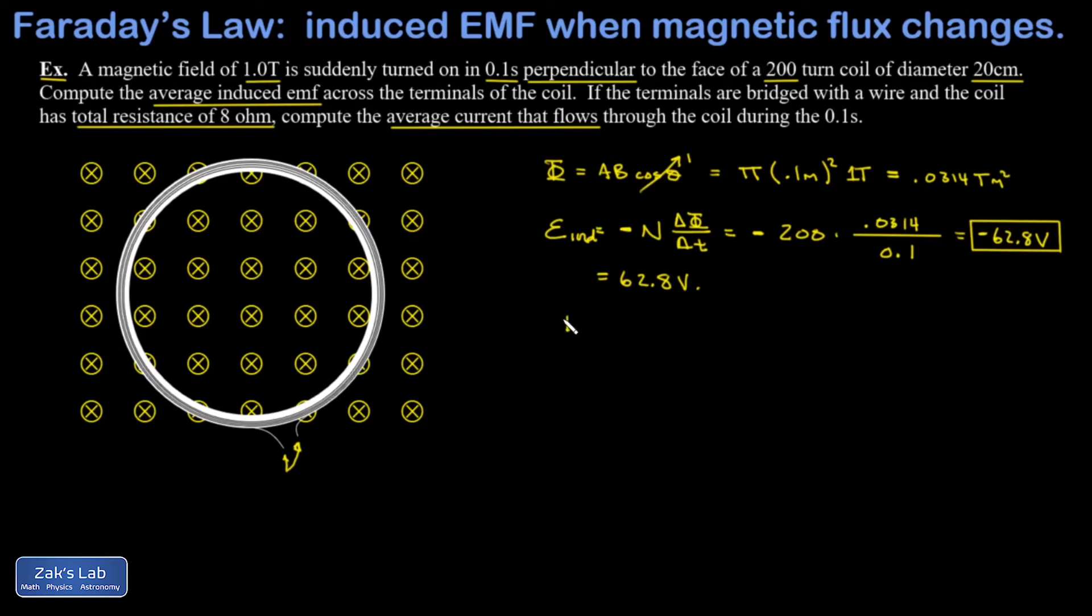So I should be able to get the current induced in the loop. That's given by Ohm's law. I equals V over R, 62.8 volts over 8 ohms. And this gives me 7.85 amps.